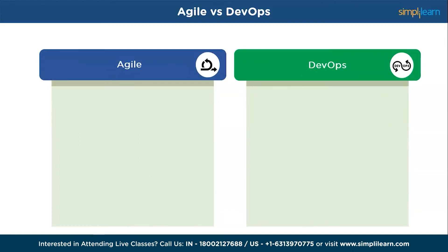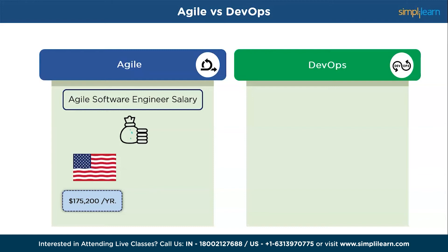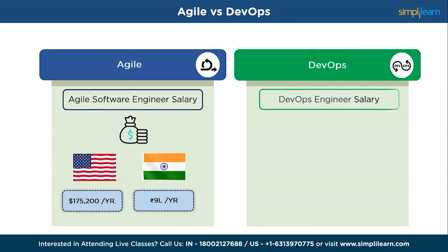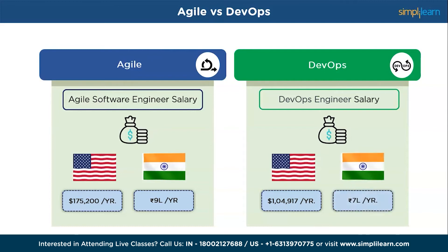Let's have a look at the salaries. The average salary for an Agile software engineer in the United States is around $175,000 annually, and in India it is 9 lakhs per annum. The average salary for a DevOps engineer in the United States is around $104,000 annually, and in India it is 7 lakhs per annum.